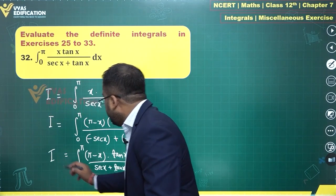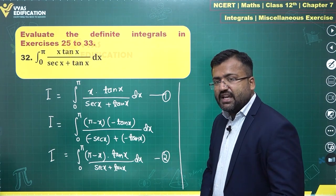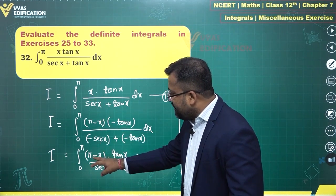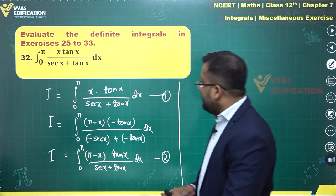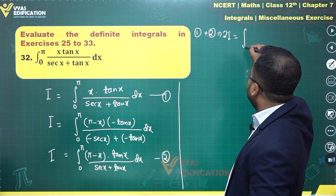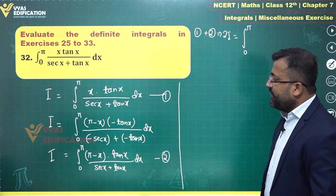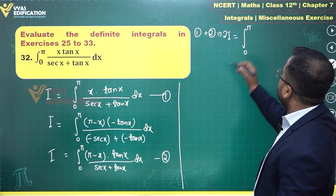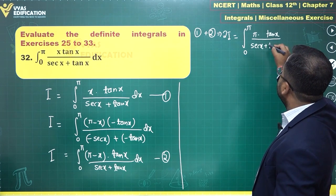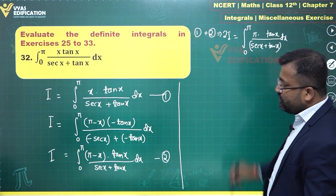Now this is the first form of I and the second form. Adding equations 1 and 2, since tan x, sec x, and tan x are throughout the same, we get 2I equal to the integral from 0 to π of (x + π - x)·tan x divided by (sec x + tan x) dx. The x cancels to give π.